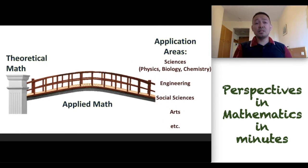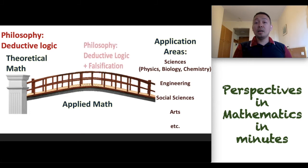There can be also differences in the philosophy that we are going to use. In theoretical mathematics, we usually use deductive logic. And in applied mathematics, there is deductive logic plus falsification. If we are going to use mathematics in the different sciences. Falsification demarcates between science and the pseudoscience. And if we are going to use mathematics in the arts, there is deductive logic plus aesthetics because there are different standards of beauty.